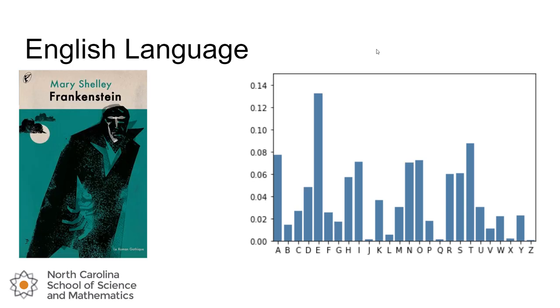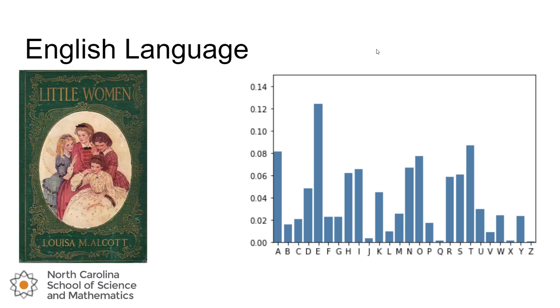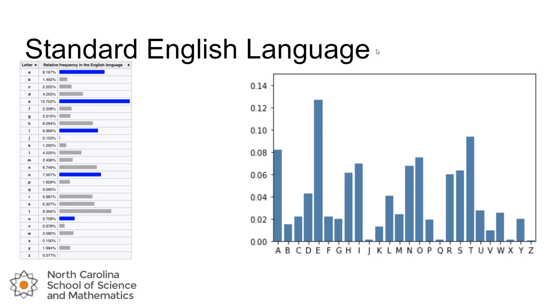If we go to Frankenstein, again a little bit different but mostly the same patterns. And Little Women, no different. We're gonna see that English language as a whole has a pretty standard percentage of character distribution.